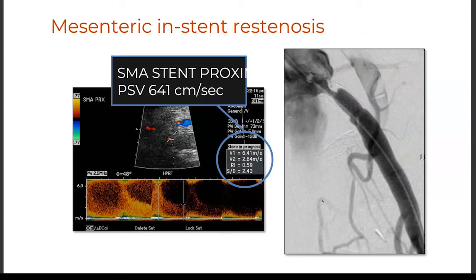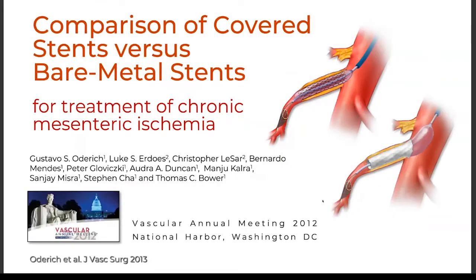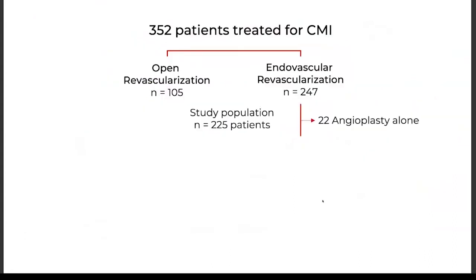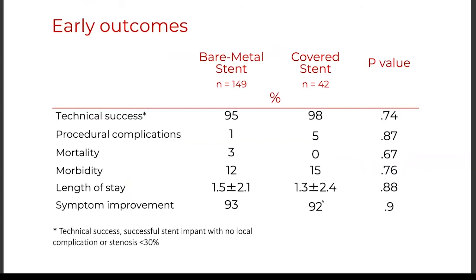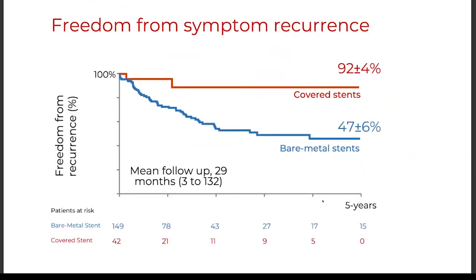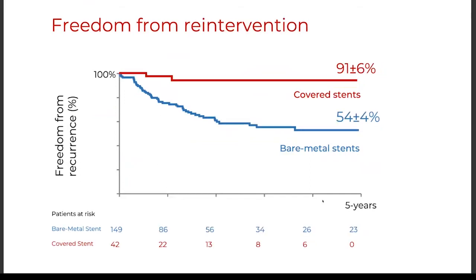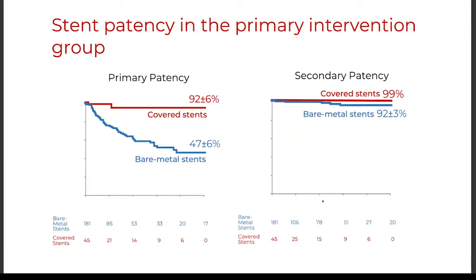That led to a paper presented at the Vascular Annual Meeting comparing bare-metal with covered stents. We divided the cohort into a primary intervention group — index intervention in a native vessel — versus a re-intervention group, and compared bare-metal with covered stents. Technical success and early outcomes were identical, but covered stents had far better freedom from symptom recurrence, far better freedom from re-intervention, and improved patency rates similar to what is achieved with open repair.